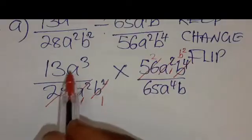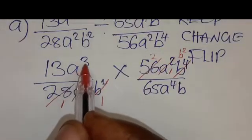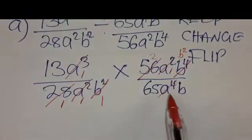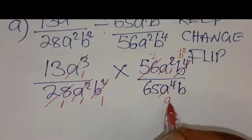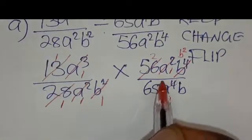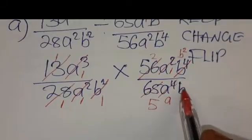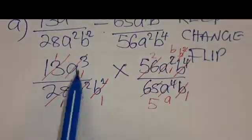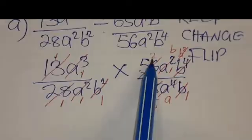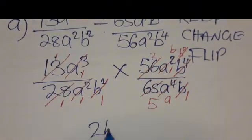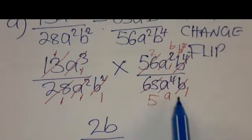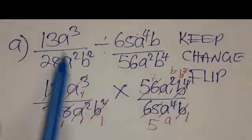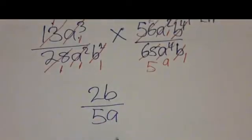Coming to this diagonal: here we have A cubed and A to the power 4. A cubed into A cubed is 1; A cubed into A to the power 4 leaves A. Then 13 into 13 is 1, and 13 into 65 is 5. We have a B here and B squared there: B into B is 1, and B into B squared leaves B. So 1 × 1 × 2 × B over 1 × 1 × 5 × A gives 2B over 5A. The whole big expression has been reduced to 2B over 5A.